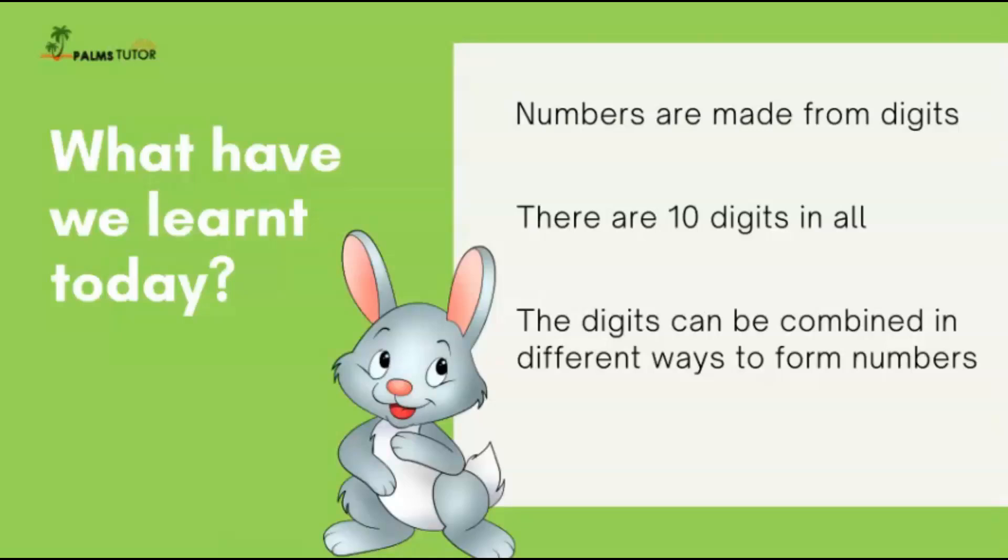So what have we learned today? We have learned that numbers are made from digits. I hope you are keeping a good note. You can pause this video at this point and make sure that you write this as well. Always try to keep notes as we continue with the lesson. You'll be thankful that you did. Now we've learned that numbers are made from digits, just like we make cake from flour. And then we have 10 digits in all. There are only 10 single digits. Then these digits can be combined in different ways to form numbers.